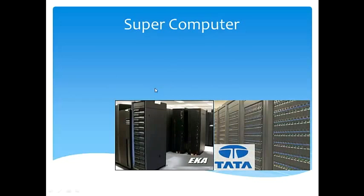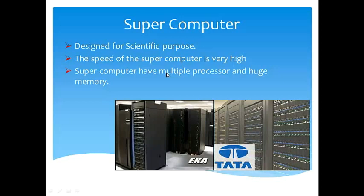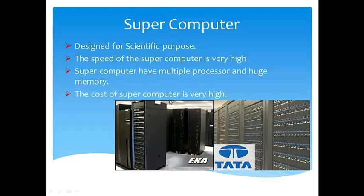Next comes supercomputer. The name itself says super — this computer is very, very fast and has very huge storage. Supercomputers are mainly used for research and scientific purposes. The speed of supercomputers is very, very high. Supercomputers have multiple processors and huge memory. Unlike regular computers with a single processor, a supercomputer has multiple cabinets or system units working with multiple processors and can store huge volumes of data. However, the cost of a supercomputer is very, very high.